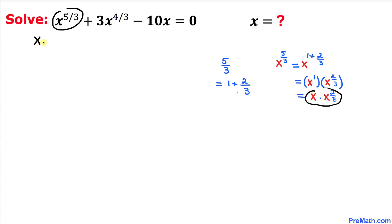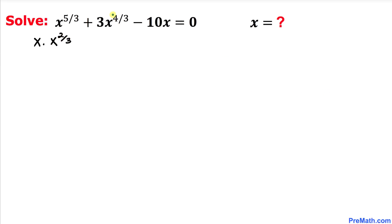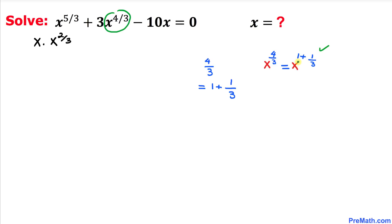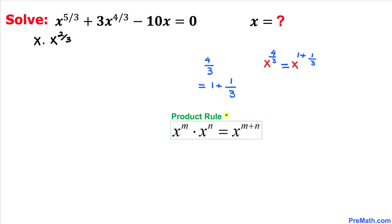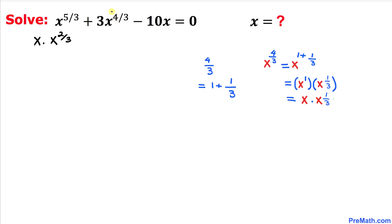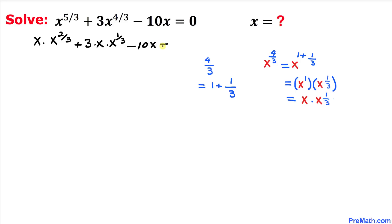Now let's replace x to the power 5 over 3 with x times x to the power 2/3. Next, let's focus on the exponent 4 divided by 3. This could be written as 1 plus 1/3. So x to the power 4/3 becomes x to the power 1 plus 1/3, and using the product rule again, this is x times x to the power 1 over 3. So we now write plus 3 times x times x to the power 1 over 3, minus 10x equals 0.